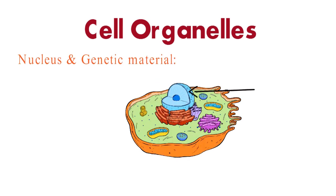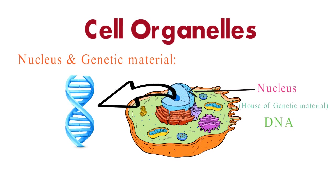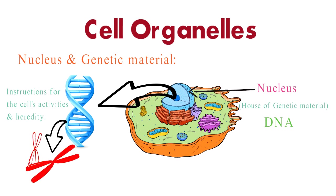At the center of most eukaryotic cells, we find the nucleus. This organelle houses the genetic material, DNA, which carries the instructions for the cell's activities and heredity. The DNA exists in the form of chromosomes and controls how the cell grows, divides, and functions.